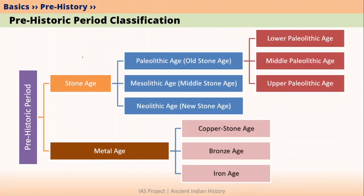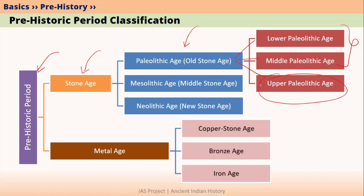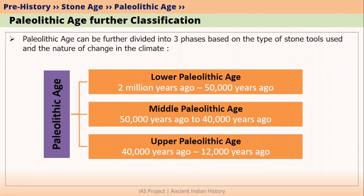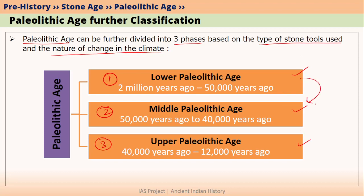In our previous videos, we have talked about Prehistoric Period, Stone Age and Paleolithic Age. We have divided Paleolithic Age into three parts and we have learned about the first two parts, that is Lower Paleolithic Age and Middle Paleolithic Age. Now let's learn about Upper Paleolithic Age. This division is mainly based on the type of stone tools used during these three periods and the nature of climate change from one period to another.